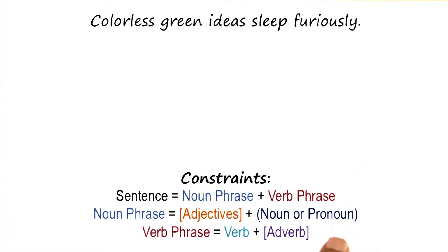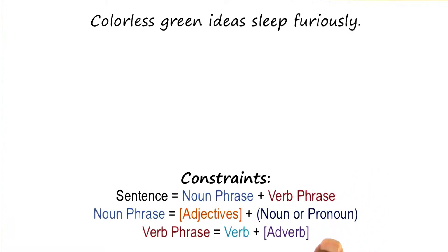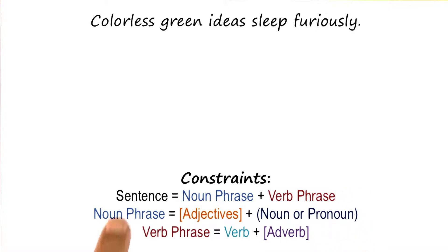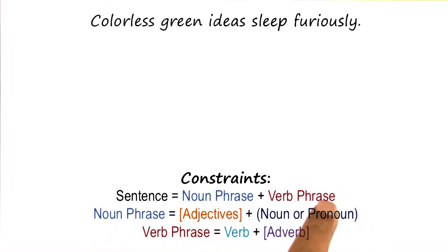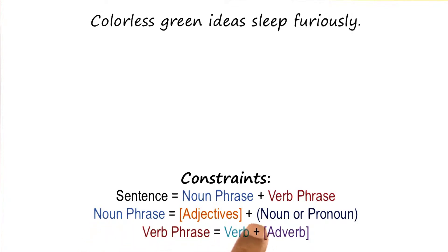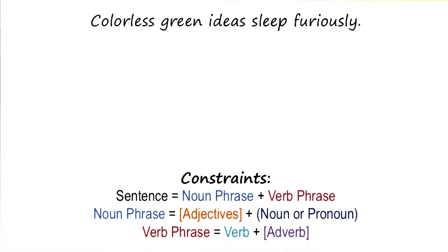Consider this mini grammar — a small subset of the English language grammar consisting of just three simple rules. A sentence can go into a noun phrase followed by a verb phrase. A noun phrase can be optional adjectives followed by a noun or a pronoun. The square bracket here means optional. A verb phrase is composed of a verb followed by an optional adverb.